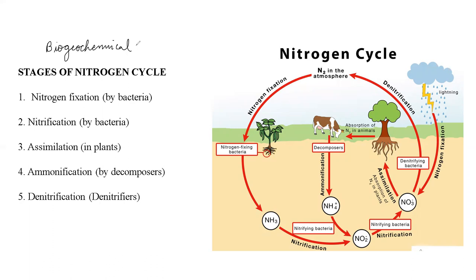Before we begin, we need to understand the need for the nitrogen cycle. Plants require nitrogen in abundant amounts for carrying out various physiological and chemical procedures inside their bodies. However, the problem is that nitrogen is not easily available to plants — it exists in inaccessible forms. For example, about 79% of atmospheric air contains nitrogen, but this nitrogen is not easily accessible to plants. Therefore, there needs to be some mechanism by which this inaccessible form of nitrogen can be converted into an accessible form so that it is readily available for plant uptake.